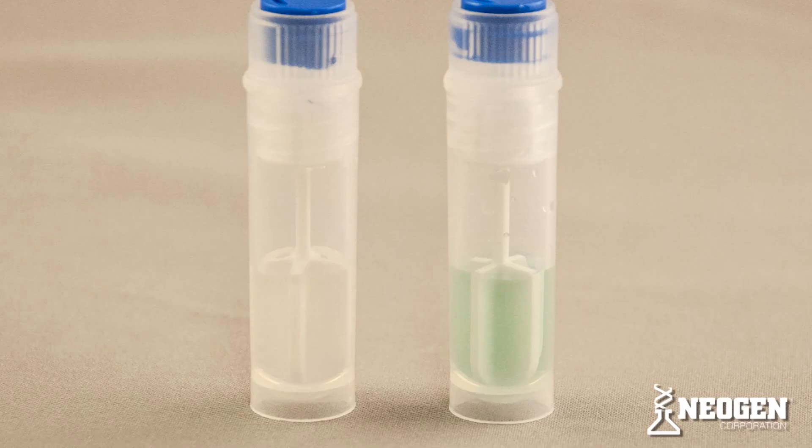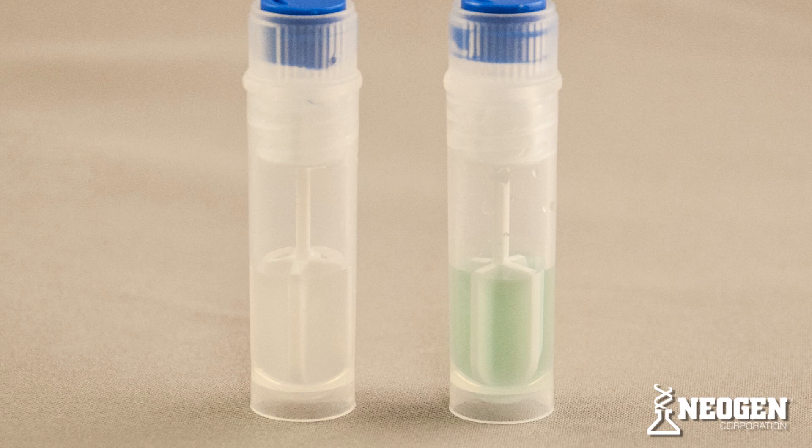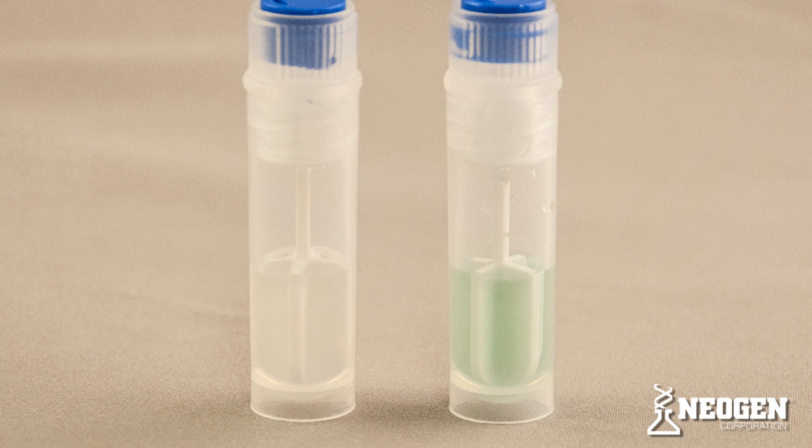In these examples, because the tube on the right has turned a pale green, it is a positive result for containing at least 1% of poultry meat. The tube on the left, with its clear liquid, is below the limit of detection.